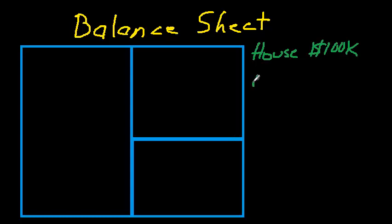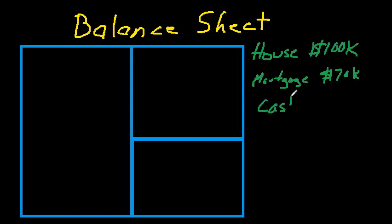And your leverage is going to be through a mortgage. You're going to borrow $70,000. Well if you're going to borrow $70,000 on a $100,000 house, then that assumes that you're going to put in $30,000 of your own cash. And whether you're an individual, a company, or a government, the balance sheet looks the same for all. One might be more complicated than the other, but the layout and the process is all the same.